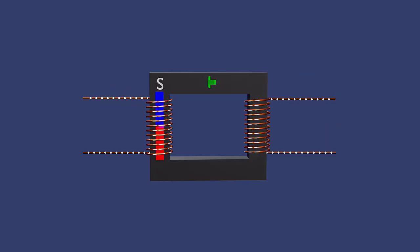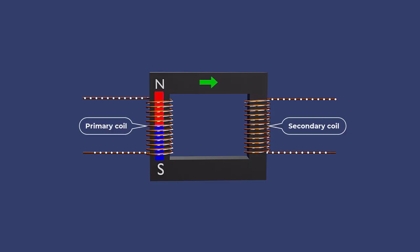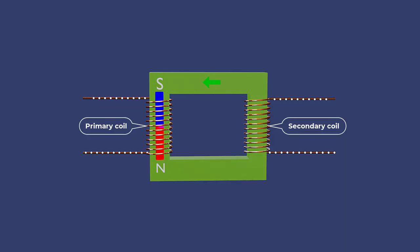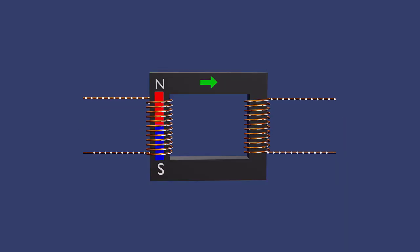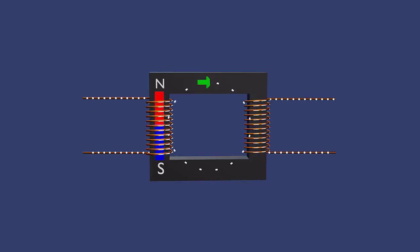A single phase transformer consists of two coils of insulated wire, known as the primary and secondary coils, wrapped around a common magnetic core. The coils are electrically isolated but magnetically linked through the core material.